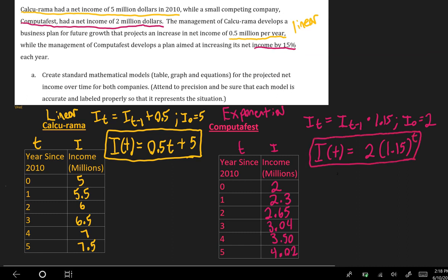And again, we want to compare the two. So notice that Computafest started lower, and I can tell that because of this number here being 2, whereas Calcurama started higher. But how's it going to look over time is the question that we want to answer. So I'm going to graph both of these in Desmos so that we can see.